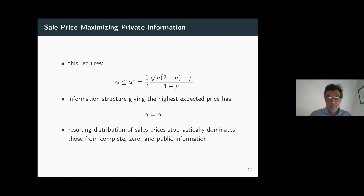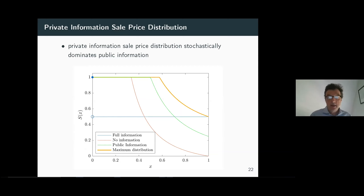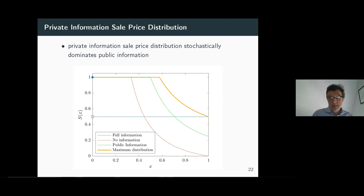We construct an equilibrium where the firm with signal 1 — whose lower bound is one — prices deterministically at one, while the firm receiving signal 2 — whose lower bound is two — randomizes over an interval just below one. This is the ordered support property. The highest alpha satisfying the equilibrium constraint is the one that maximizes the sales price. The resulting information structure gives us a higher distribution in the sense of first-order stochastic dominance, strictly above all other distributions considered.